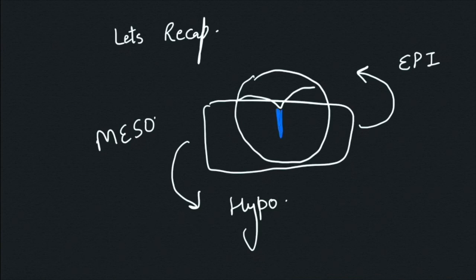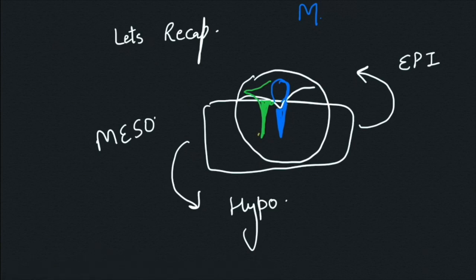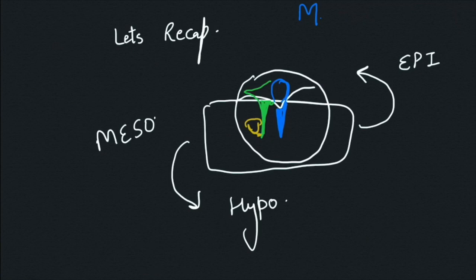The structures visible in the mesotympanum when examining the tympanic membrane include the handle of the malleus — I'm drawing it — while the head lies in the epitympanum and hence cannot be seen through a total perforation. Other than the malleus, we can see the incus. The body of the incus lies in the epitympanum, but the long process lies in the mesotympanum and is visible through a total perforation. The short process and body of the incus are in the epitympanum and cannot be seen. The stapes, with its two crura and foot plate, is present in the mesotympanum and can be seen through a total perforation of the pars tensa.